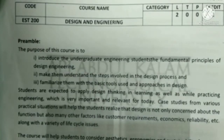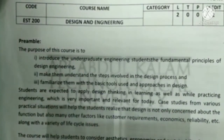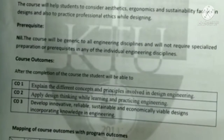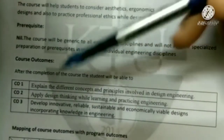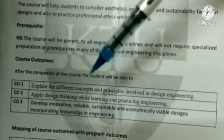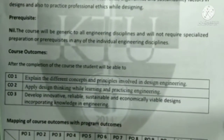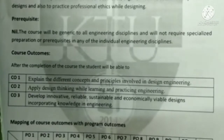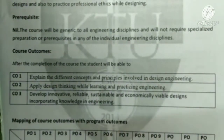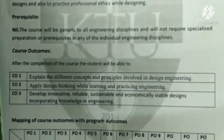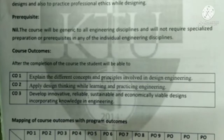Good morning students. We are going to see our subject Design and Engineering, subject code ESG200. It is a two-credit course. After studying this subject you will be able to achieve some outcomes. The first outcome is to explain the different concepts and principles involved in design engineering — the major definitions associated with design engineering that you may not be aware of now.